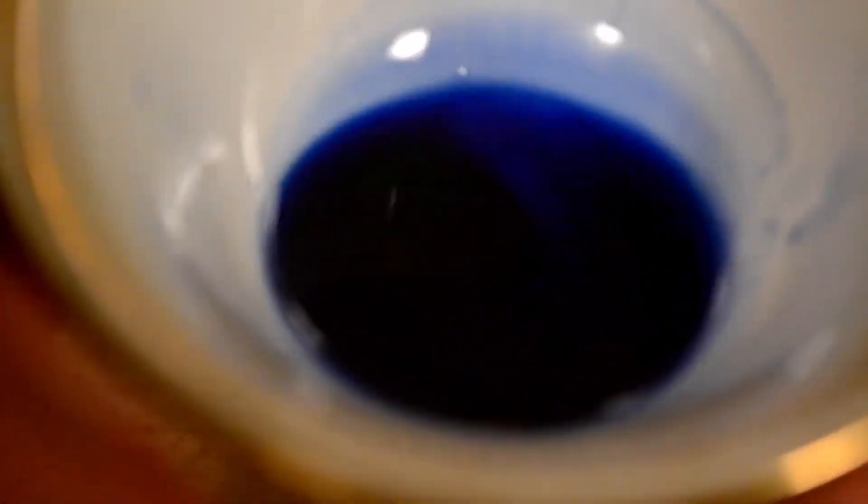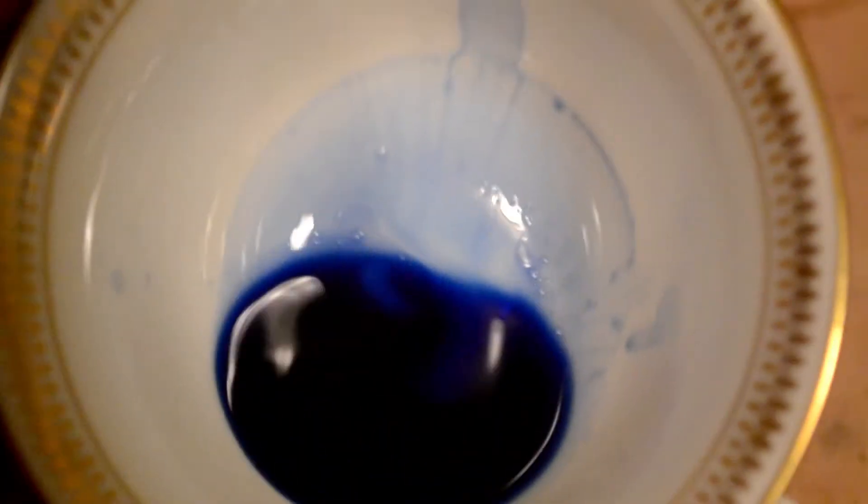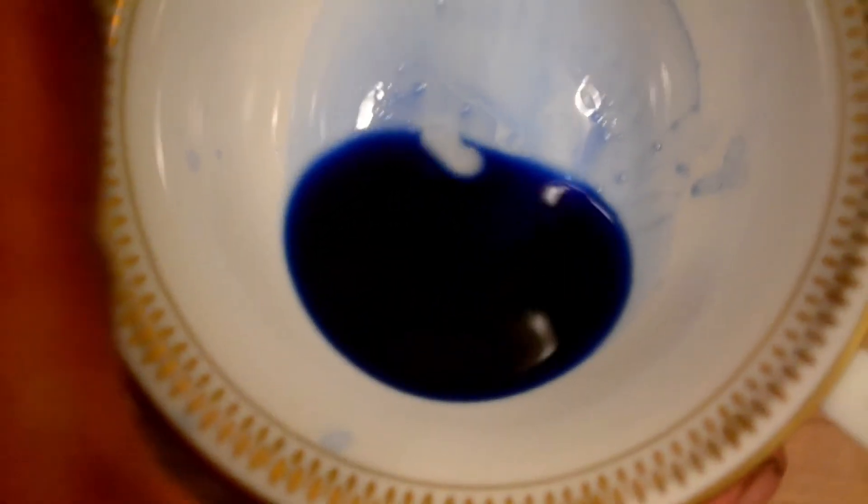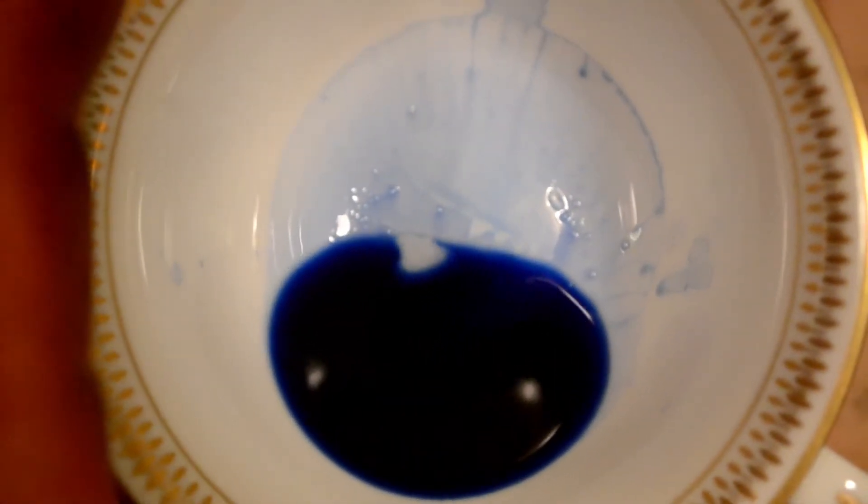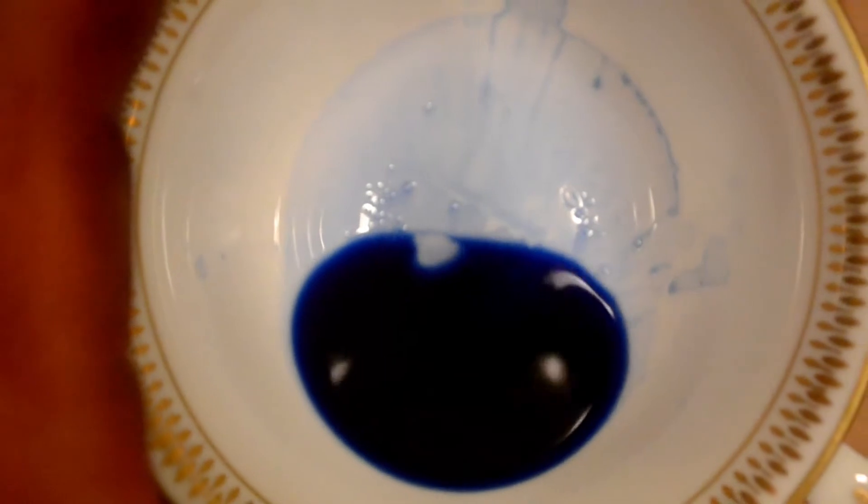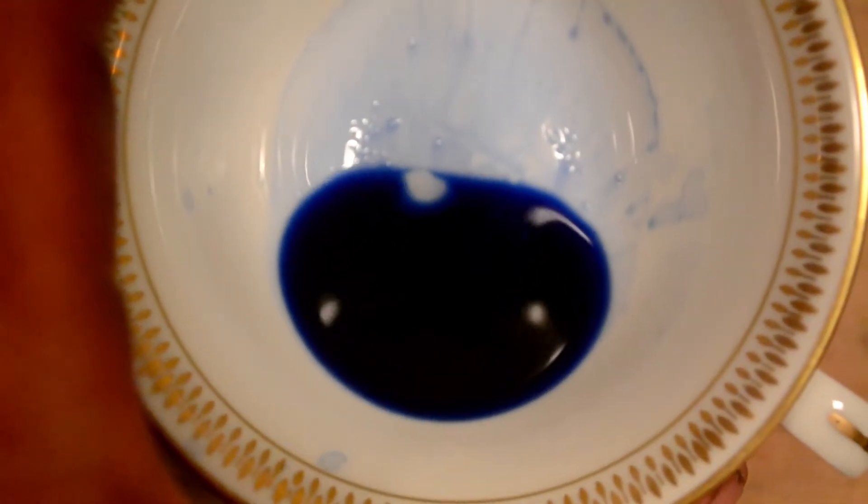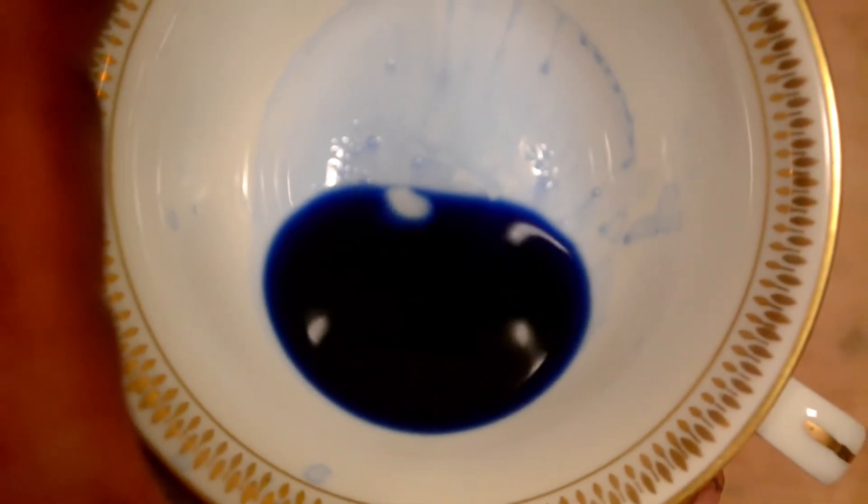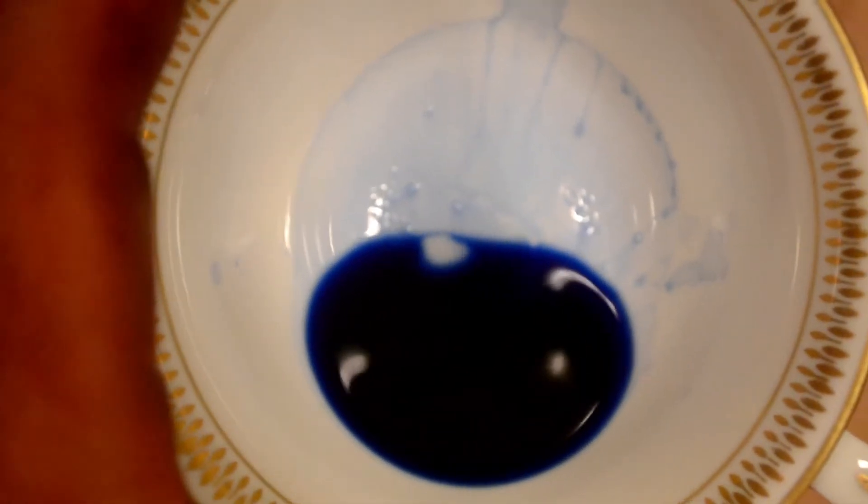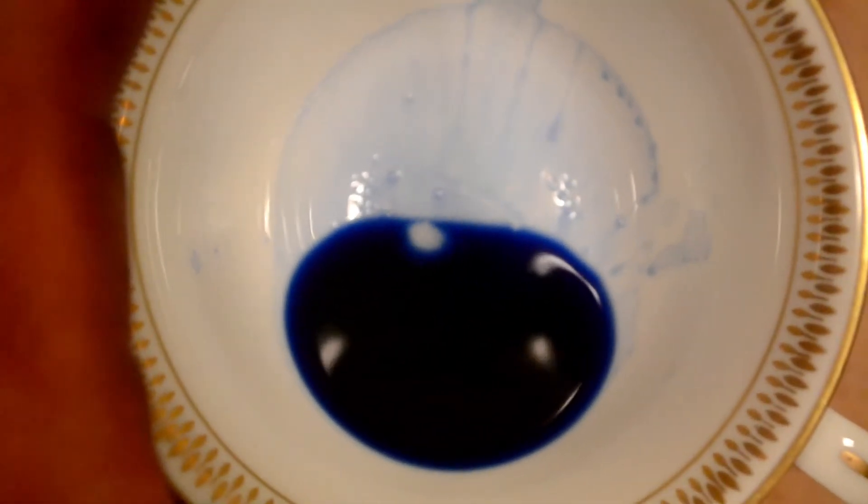Now, when I turn the cup, you should be able to see, there it is. Right in the center. That's the hydrosol. And the rest is essential oil. So, I can essentially just squeeze this off until all I'm left with is the hydrosol.